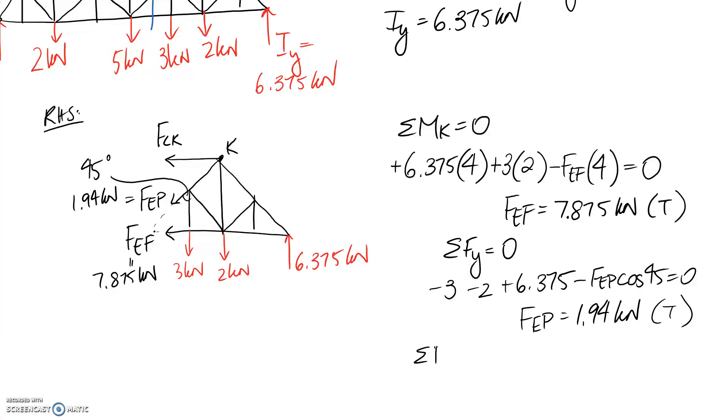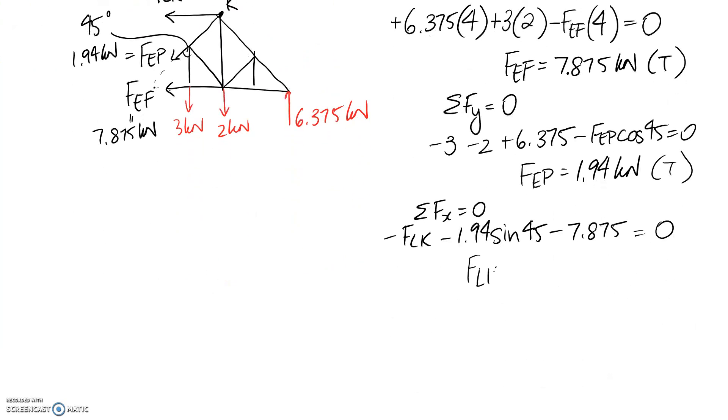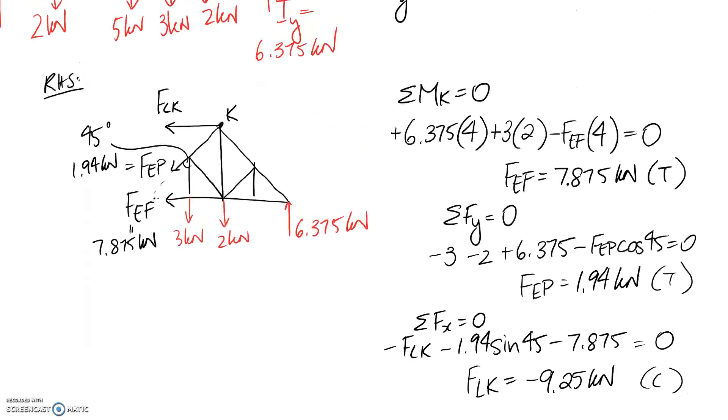We have 1 left, which we should be able to get from summing forces in x. So we have FLK in the negative direction, and we have part of this in the negative direction. According to the angle there, it's going to be the sine part. We have this in the x direction as well. It's negative, and these are all in y only, so they get neglected from it. If we go through and solve for FLK, that's about negative 9.25 kilonewtons. It comes out negative, which means the direction was incorrect, so it's actually going to be in compression. We drew it pulling away, so it's actually going to be pushing onto it.